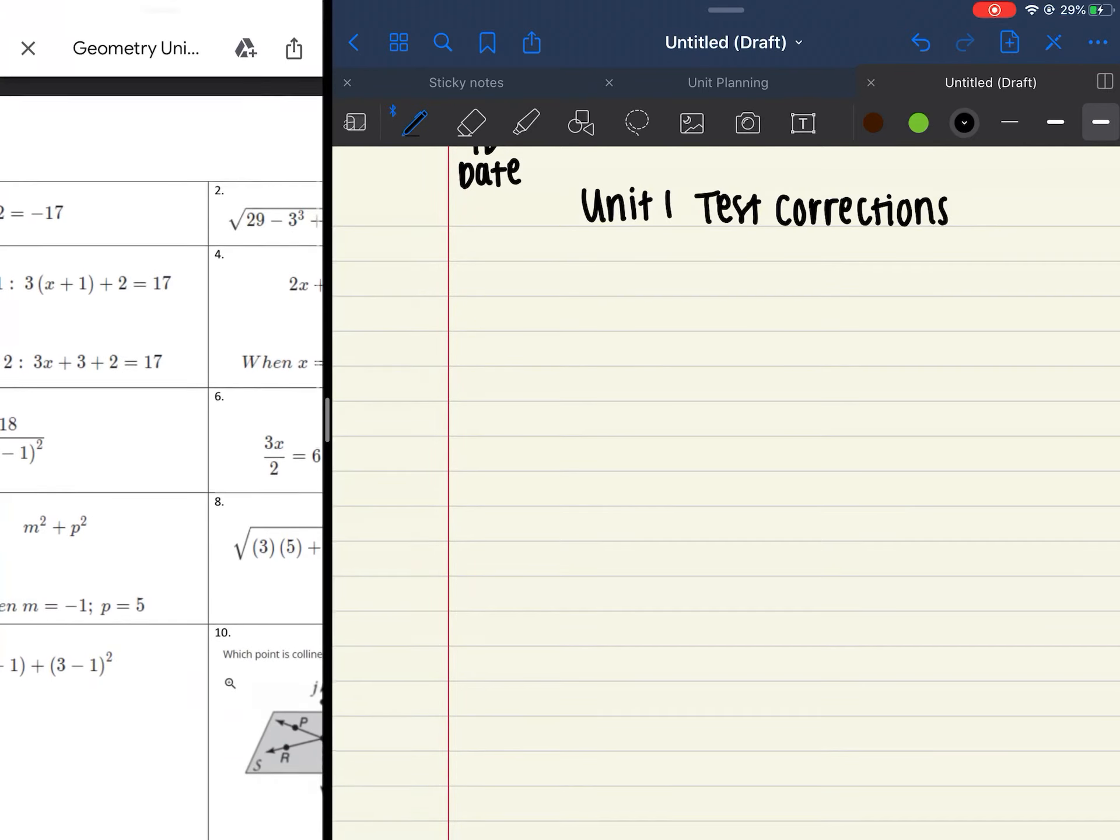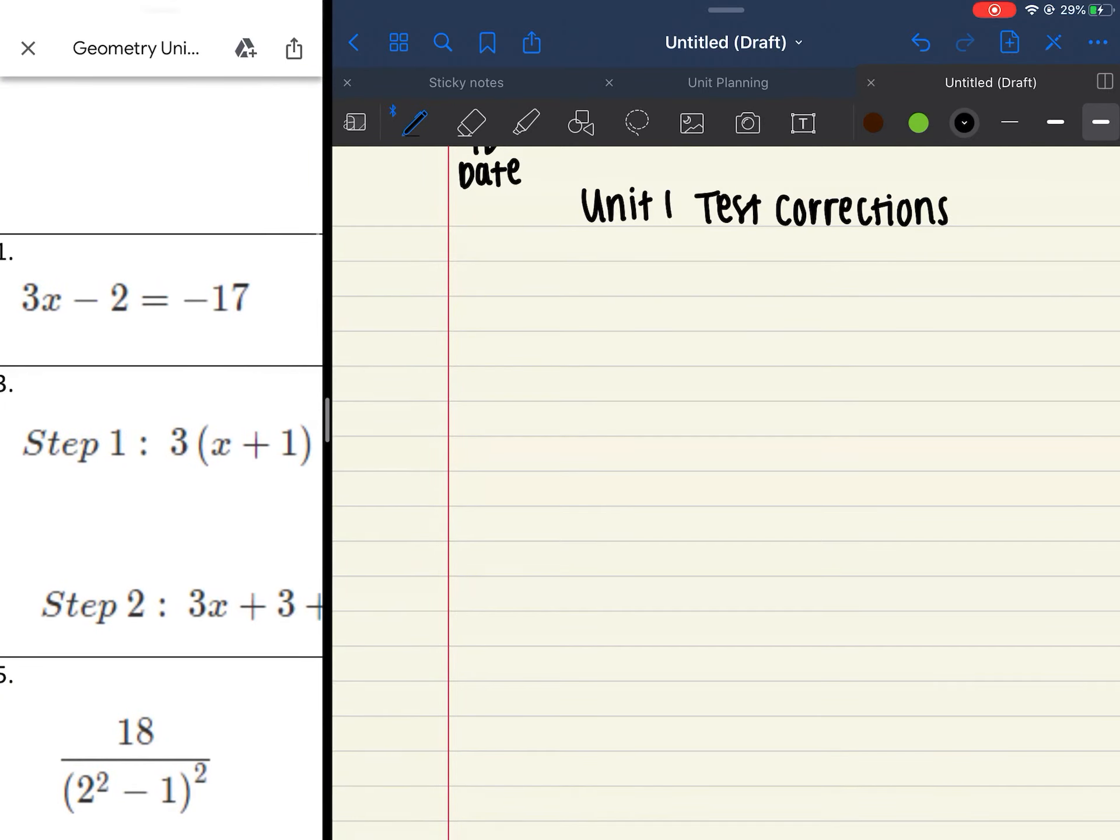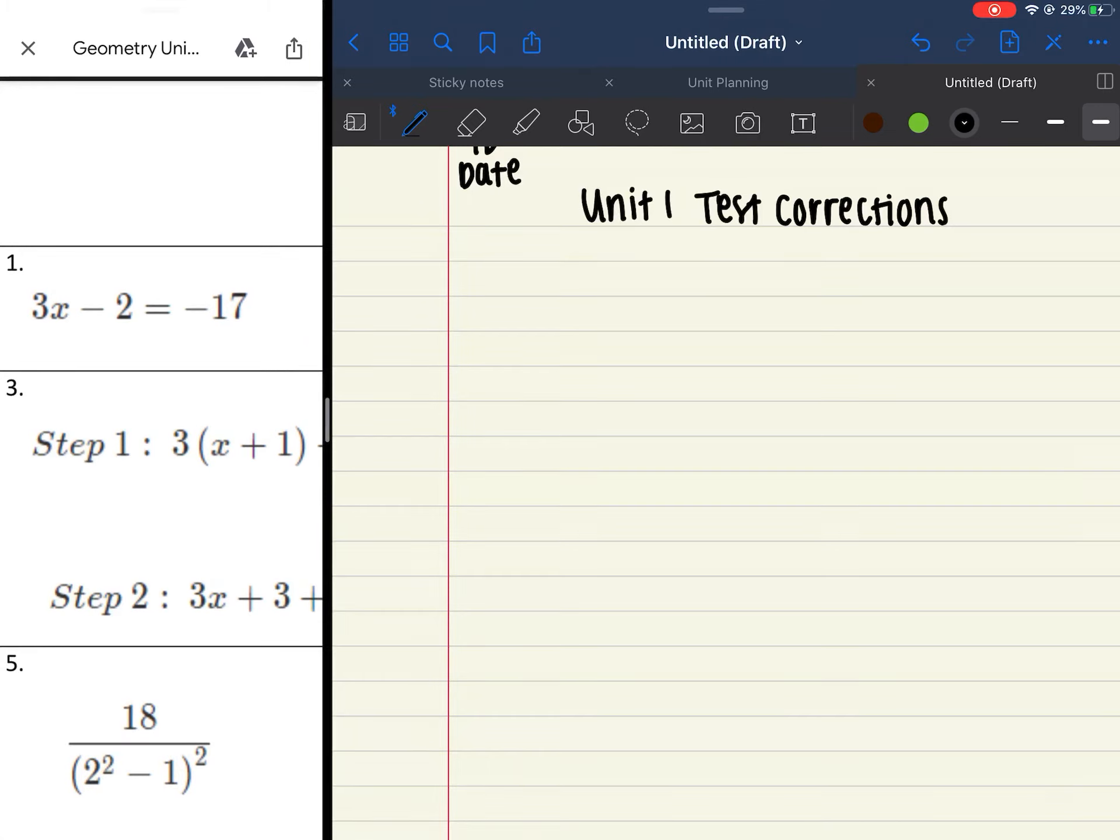So on the left side is where I have the problems. Number 1 was just solving for x. So number 1 is 3x minus 2 equals negative 17. Remember, when we're solving, our end goal is to get x by itself. So I'm first going to add 2 to both sides, cancel out, and I'm left with 3x equals negative 15. And my last step is to divide by 3, so then x equals negative 5.